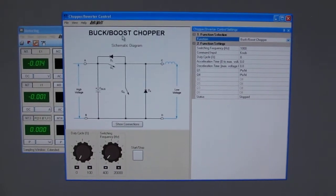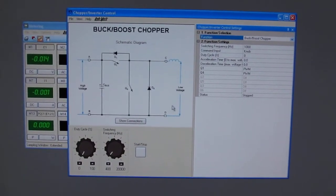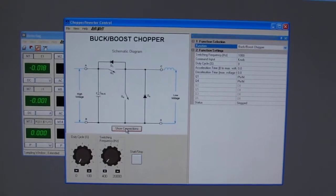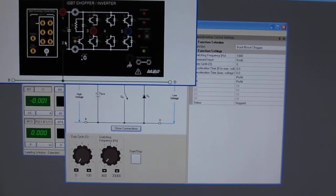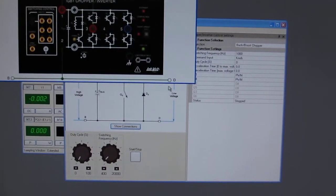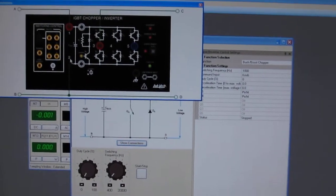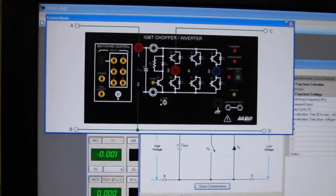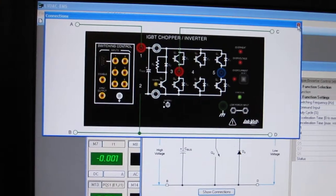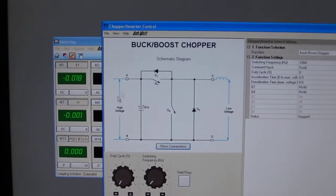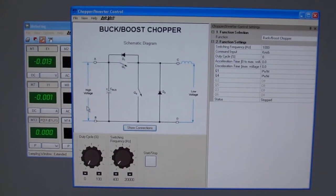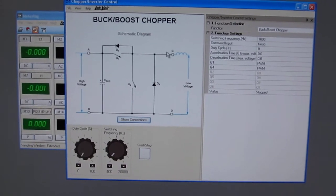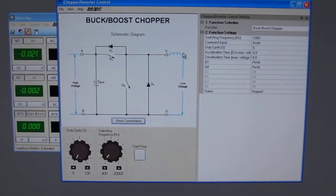How did I know how to connect that? Here I have the schematic, and if I ask to show the connections, it tells me this is A and B, this is C, and D is at the same place. So when I remove that, I just connect A and B to the high voltage my power supply, and C and D through an inductor to my motor.